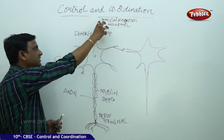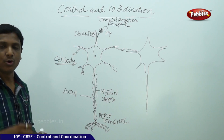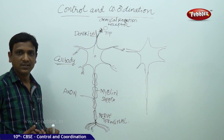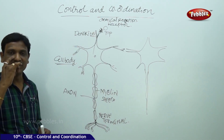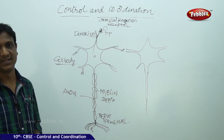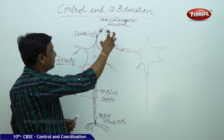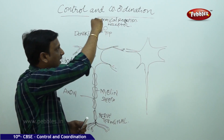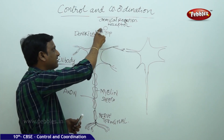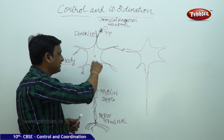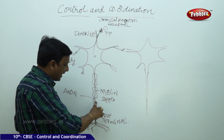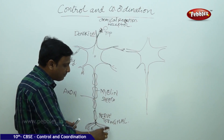The receptors located in the sense organs — the gustatory receptors in the tongue, the olfactory receptors in the nose — whenever they receive information, some chemical reaction takes place at that point, initiating an electrical impulse which is carried by the nerve cell. This electrical impulse travels through the nerve cell to the tip.